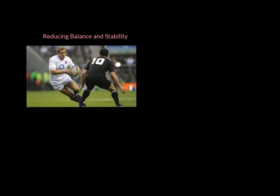Are there times when you'd want to reduce balance and stability? The answer is yes. Looking at Johnny Wilkinson, he has a very narrow base of support with one foot in contact with the ground, his centre of mass is still quite high, and there's no line of gravity — his centre of mass is not over his base of support. The reason he's put himself in this position is that with less balance, you have increased agility. You can sidestep or swerve opponents more effectively when you're in a position of low balance.